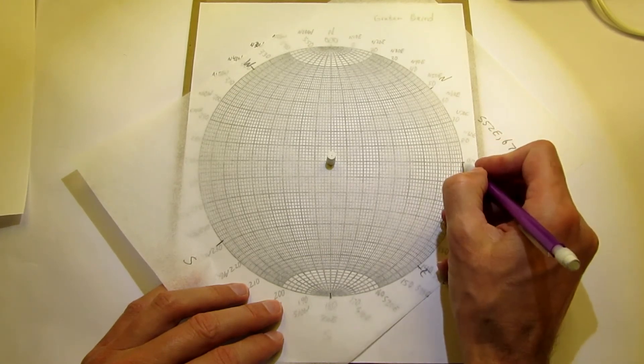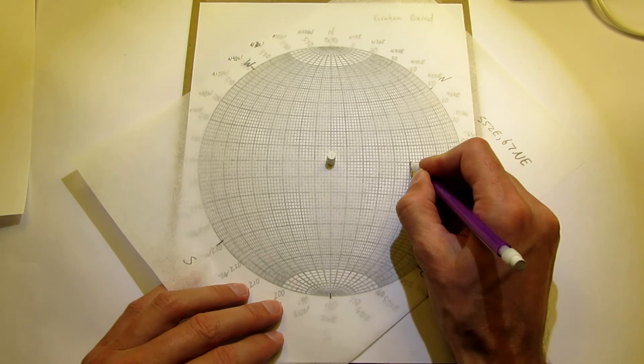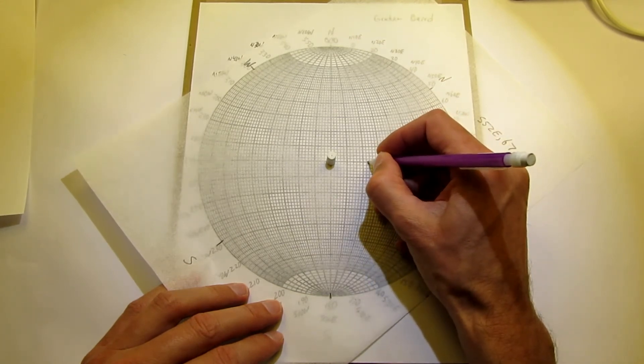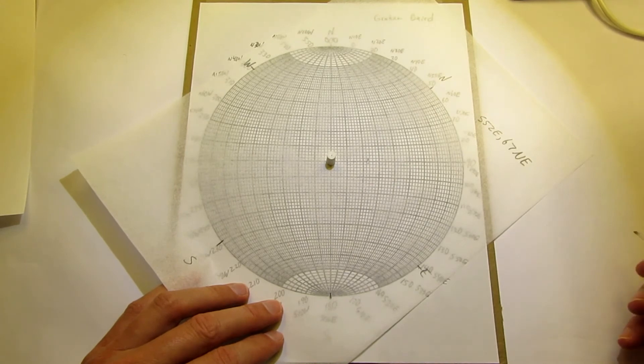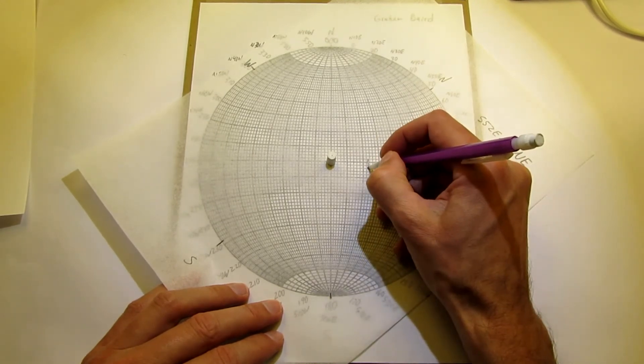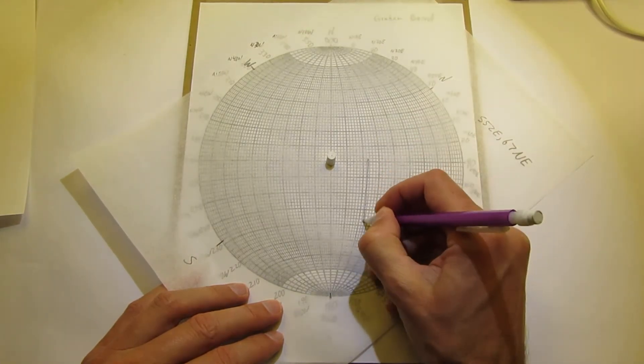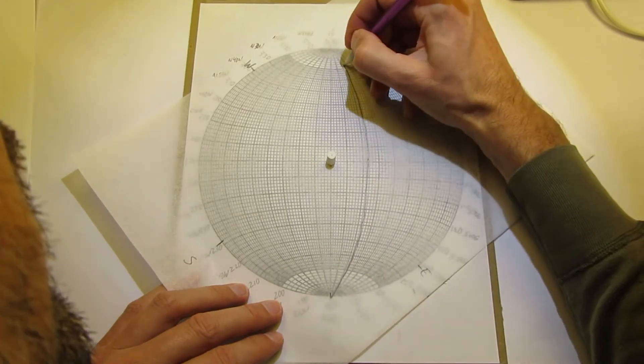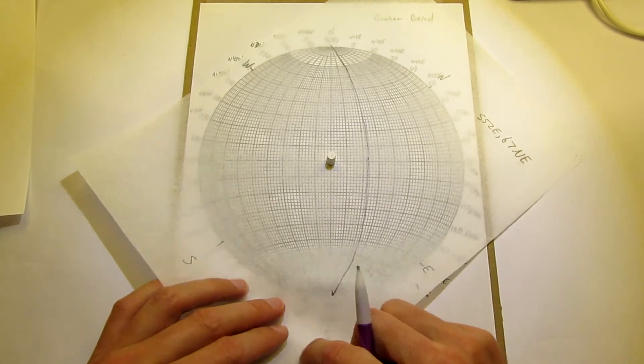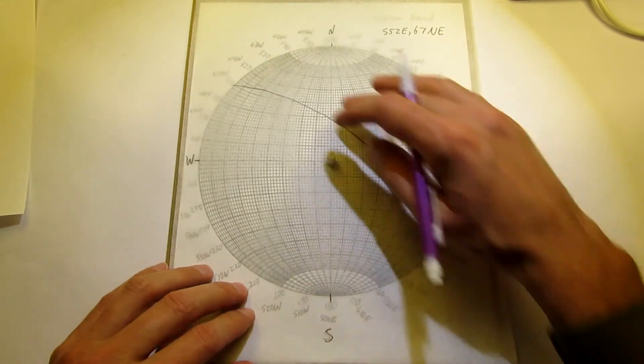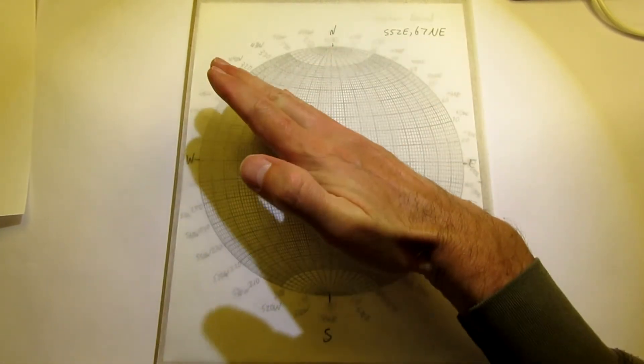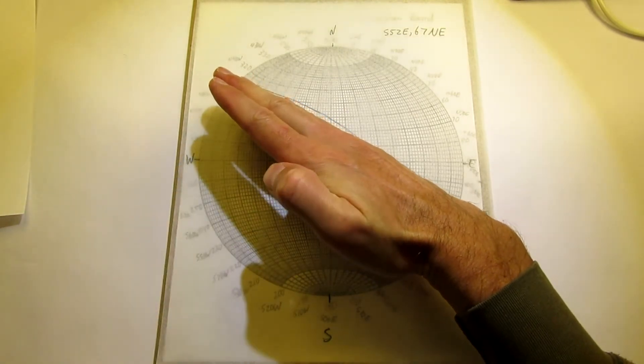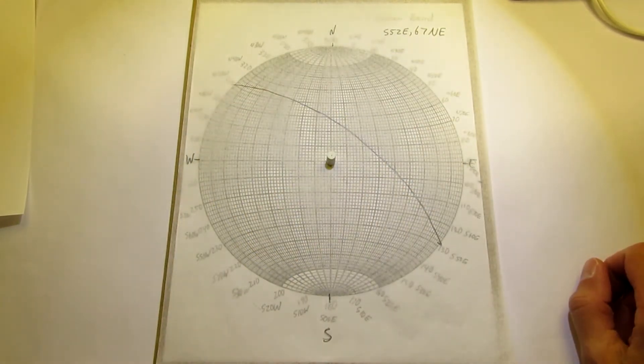67 degrees: 10, 20, 30, 40, 50, 67 is right there. And then trace in the great circle. Last step, north back to north. There's your plane. You can do your hand as kind of a reality check. Yes, dipping down to the northeast. That looks good.